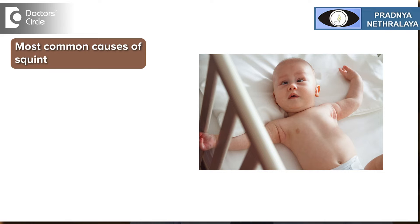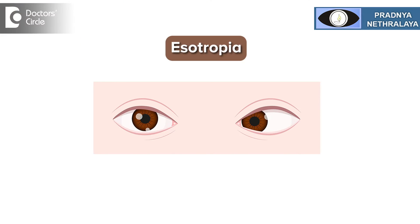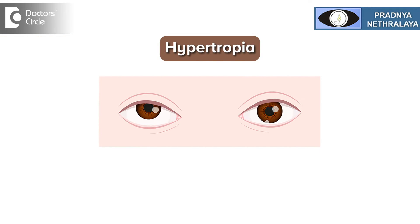The most common causes of squint occur at birth, or after six months of age. Strabismus or squint is classified into exotropia, when one eye moves outward compared to the other; esotropia, when one eye moves inward compared to the other; or hypertropia, when one eye is higher than the other.